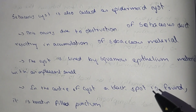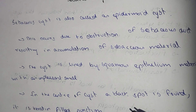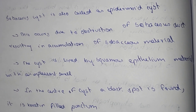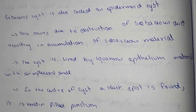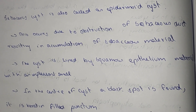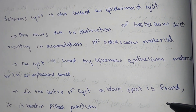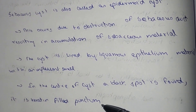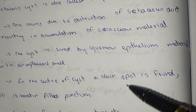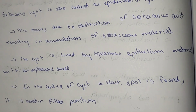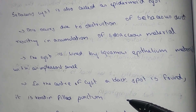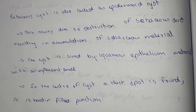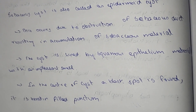This cyst is lined by squamous epithelium material with an unpleasant smell. In the center of the cyst, there is a black spot which is keratin-filled. This is called the punctum.